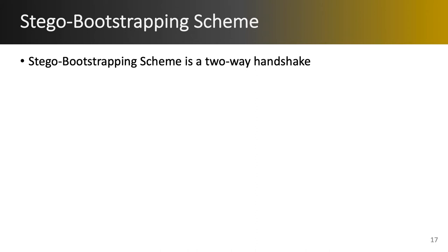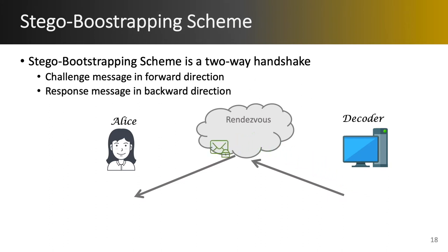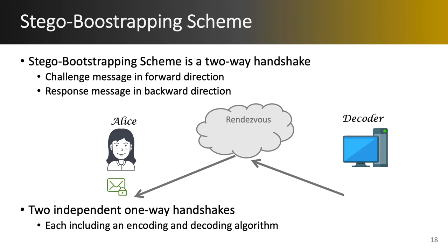The stego bootstrapping scheme can be seen as a two-way handshake — a challenge from the censored user to the decoder in the forward direction. The two-way handshake can be considered as two independent one-way handshakes that each include an encoding and decoding algorithm. This approach requires the decoder and censored user knowing each other's public keys in advance. In practice, however, the censored user knows the public key of the decoder but the decoder does not know the public key of the censored user. This motivated us to define the stego bootstrapping scheme as a unique two-way handshake where only the decoder's public key is required.